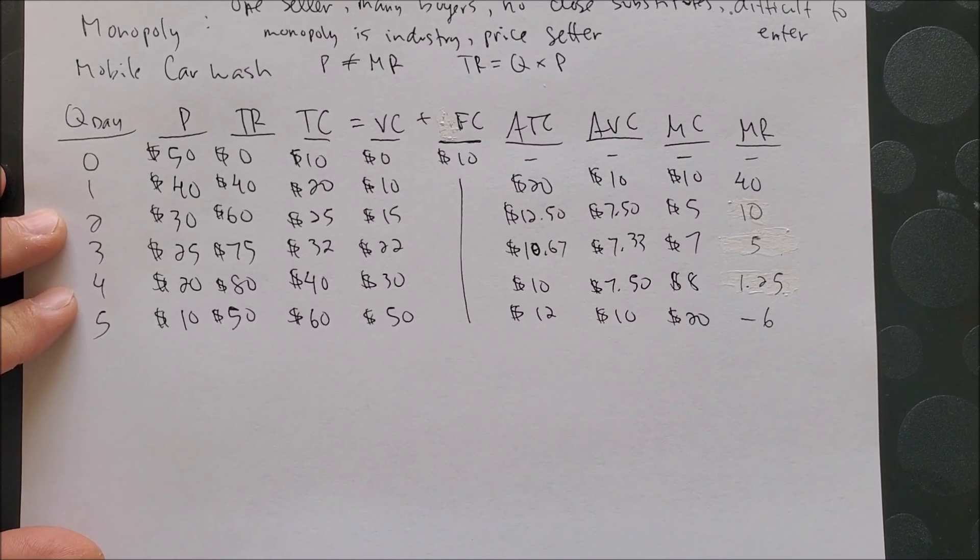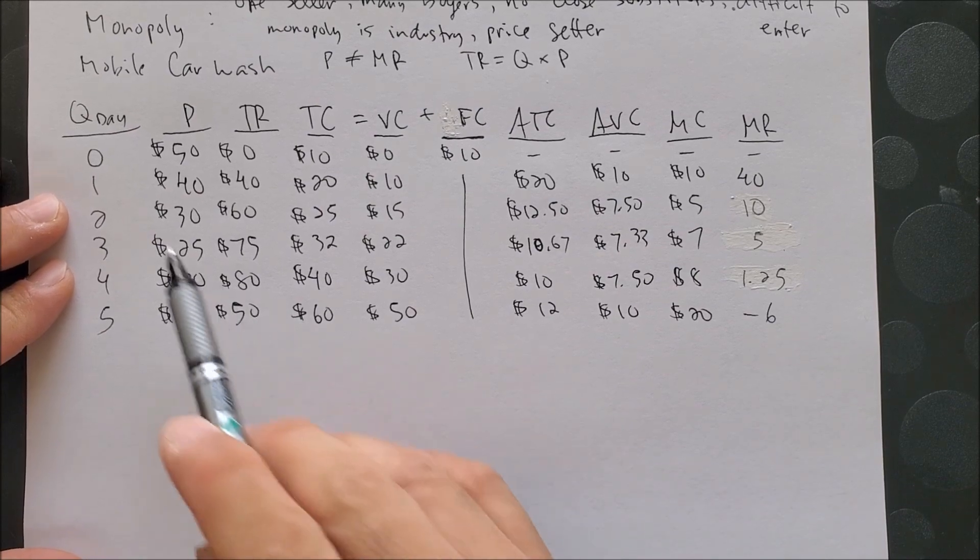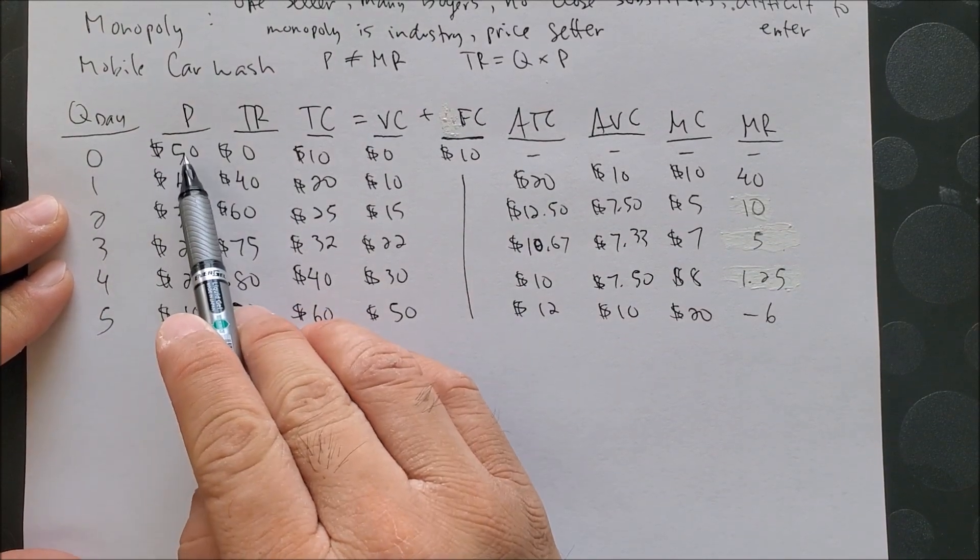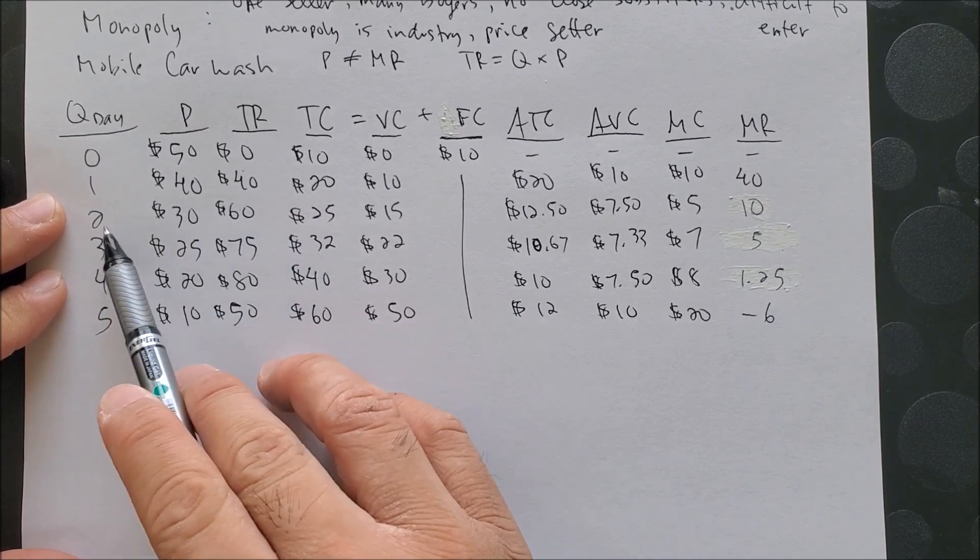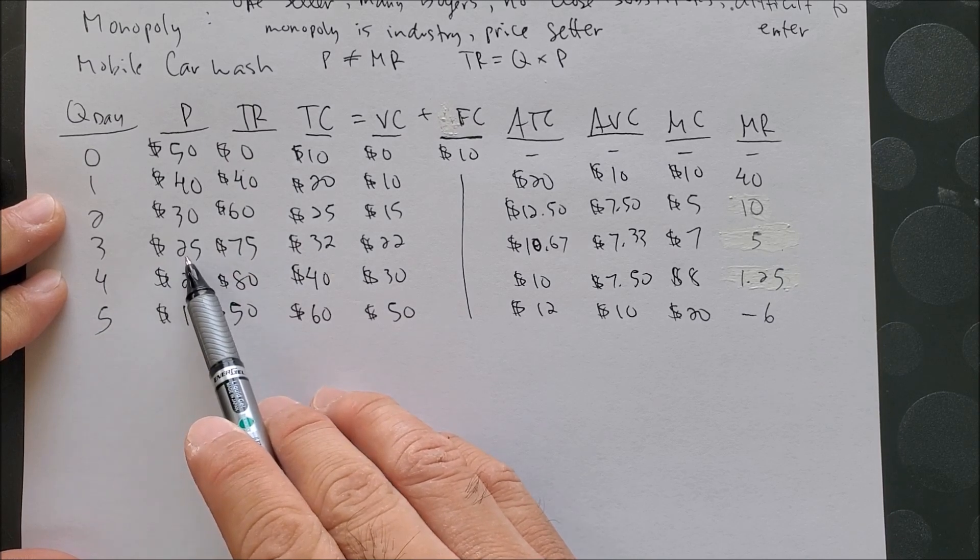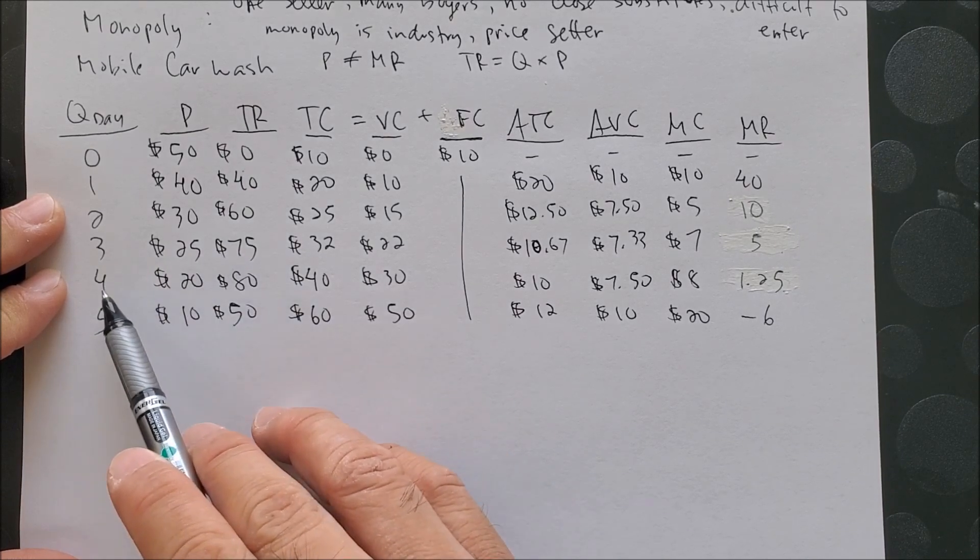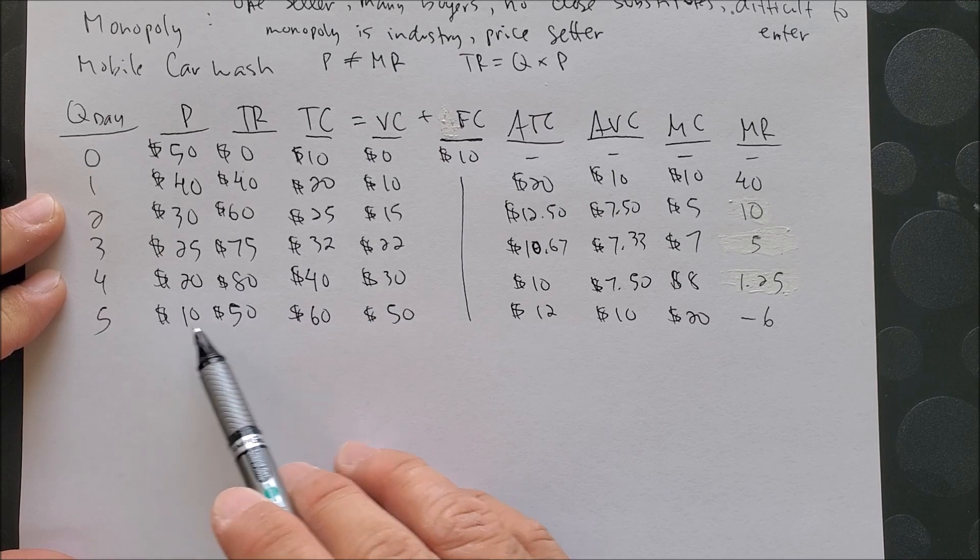So after doing the calculation, we can now see that total revenue is the following: 0 times 50 is 0, 1 times 40 is 40, 2 times 30 is 60, 3 times 25 is 75, 4 times 20 is 80, and 5 times 10 is 50.